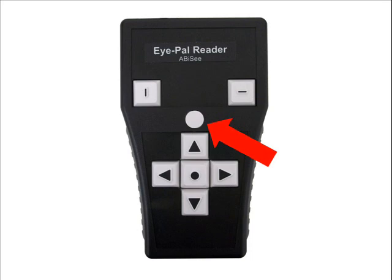Below the Help button is the Up Arrow button. It is marked with an arrow pointing up. This button is used to read the previous sentence.